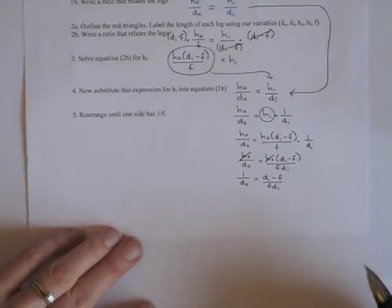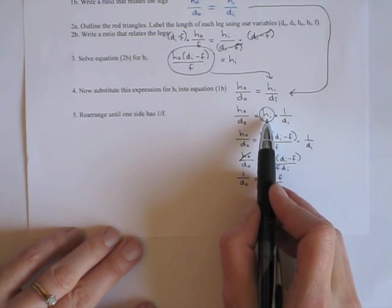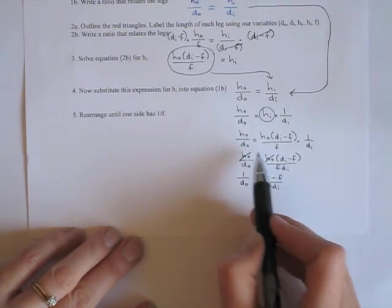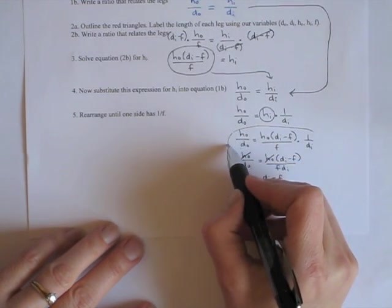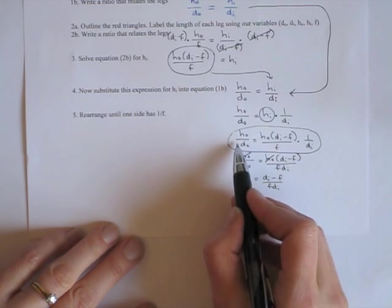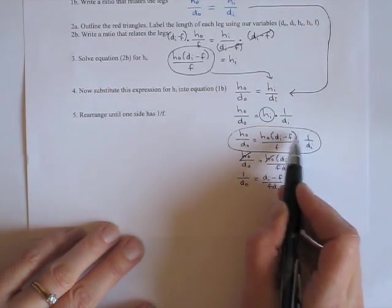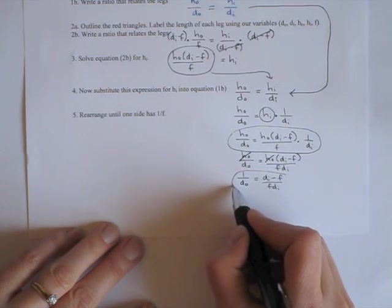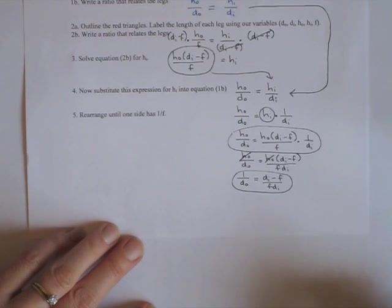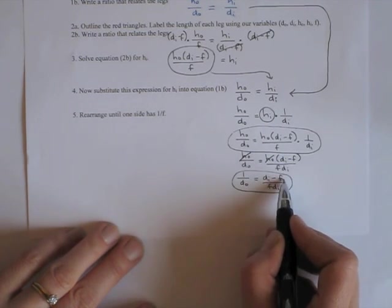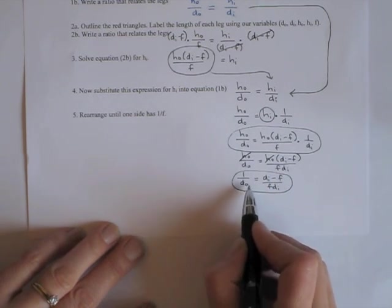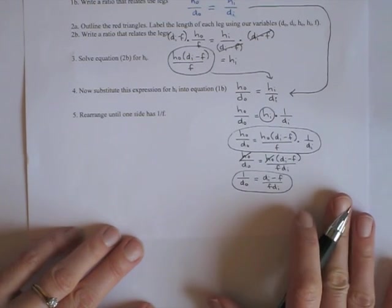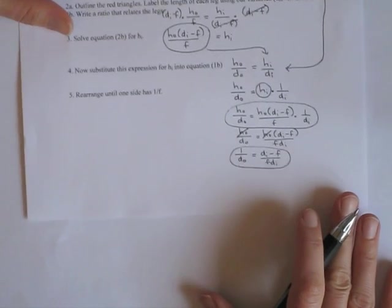I should point out that once we had substituted for HI and the HOs are canceled, at this point we have an equation that is in terms of the variables we're looking for: object distance, image distance, and focal length. Those are the only variables in this equation. But it's not a very nice looking equation. So now we're going to do a little algebra to simplify it and get it into a form that will be easier to remember and looks a little nicer.